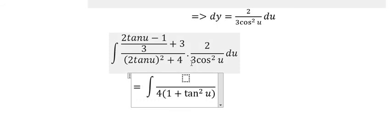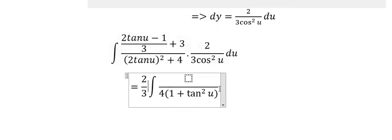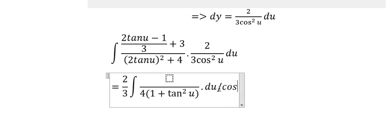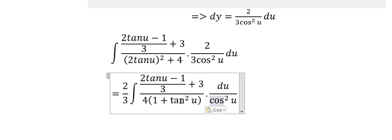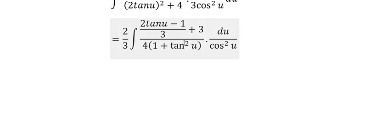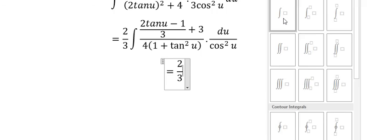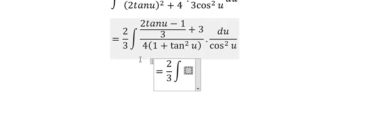We have 2 over 3 we put outside. We know that 1 plus tan u power 2 multiplied with cos u power 2, they will simplify together. So that's why we will have the tan u only. And we have 4 we put in here. And we have 2 over 3 we simplify in here. And this is about 1 over 6.